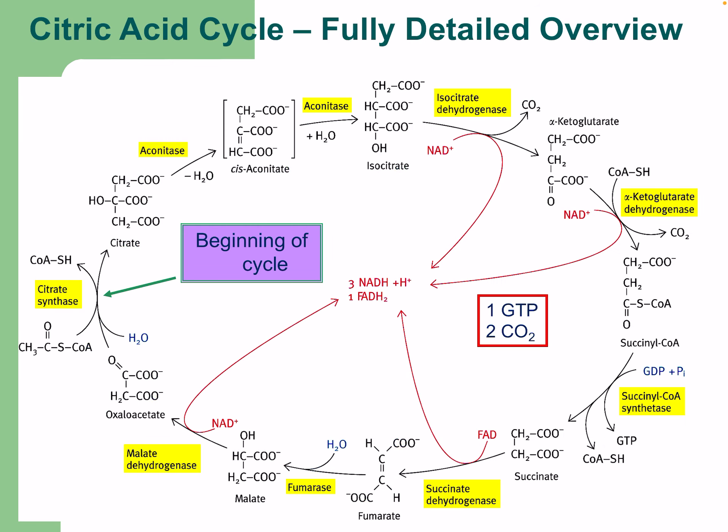Here is the fully detailed view of the cycle — a good one to redraw a few times, really focusing on when each reaction happens. We have one GDP produced, two CO2s released, and then we get our FADH2 and three NADHs at the respective steps.